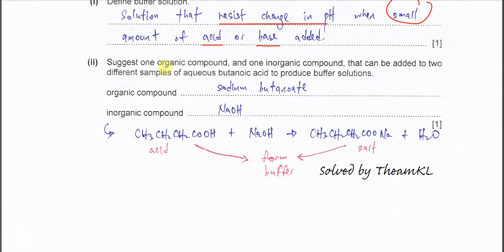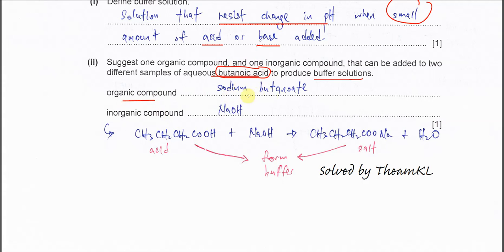Part two: suggest one organic compound and one inorganic compound that can be added to two different samples of aqueous butanoic acid to produce a buffer. To produce a buffer you must have an acid and its salt. Since butanoic acid is already provided, we need its salt. The organic compound we can use is sodium butanoate, which is the salt used together with butanoic acid to produce the buffer.